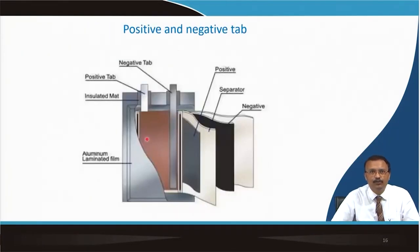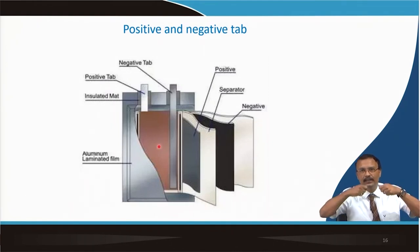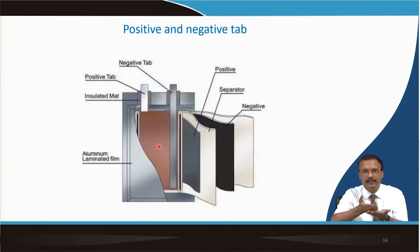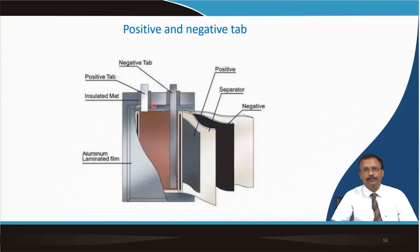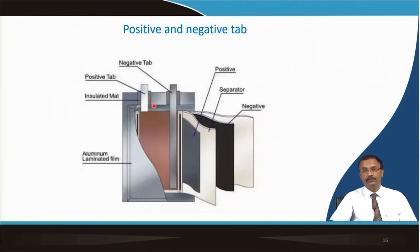In a typical pouch cell, instead of winding a jelly roll, stacking is done between the positive electrode, separator, and negative electrode. To take the electrical connection out from the electrode, you need to spot weld a metal part known as a tab — a positive tab for the positive electrode and a negative tab for the negative electrode. Usually nickel tabs are used for taking connections out from a pouch cell. In the case of a cylindrical cell, spot welding is also done.